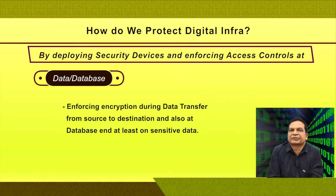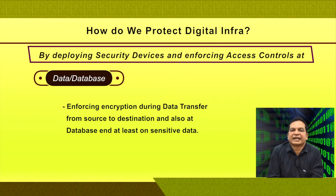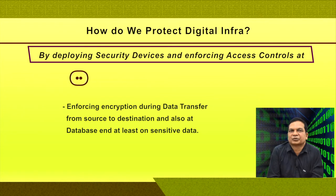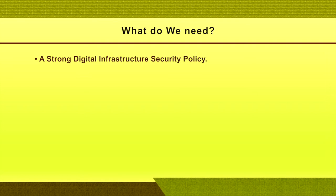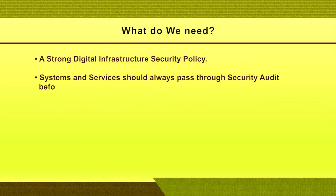Another requirement is controlled access and use of networked systems and services. For that, a strong digital infrastructure security policy is required. Systems and services should always pass through a security audit before deployment in real time. For example, once a web application is developed, we should not just host it for the public immediately. Whatever application is designed and developed, it should be tested and a security audit done. Security auditors audit the entire code to check for any vulnerabilities, identify loopholes, and close them so the web application is as robust as possible to minimize the chance of hackers intruding into the application.